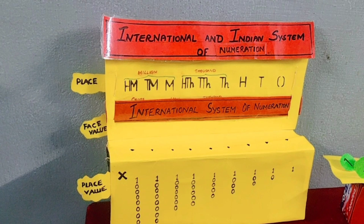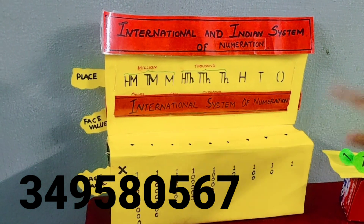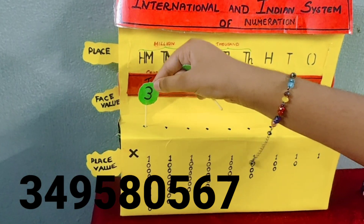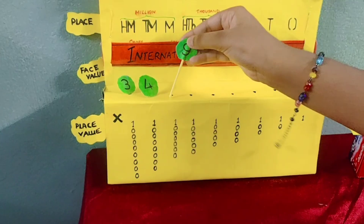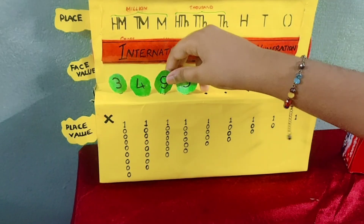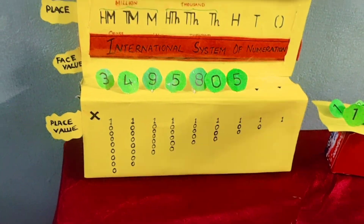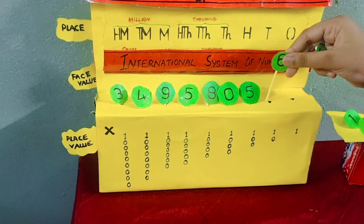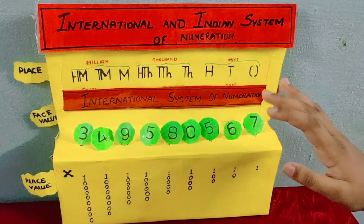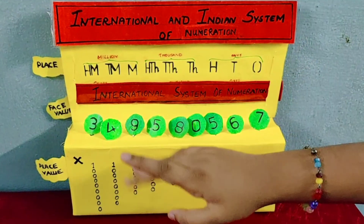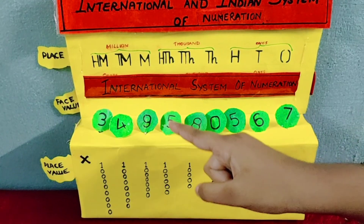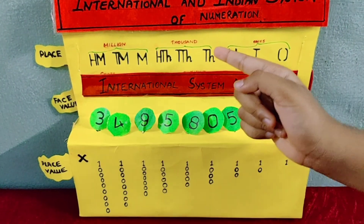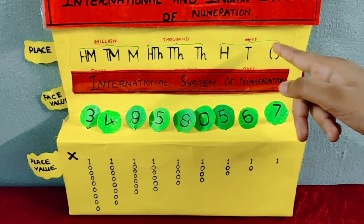Now let's see the international system of numeration. First, you have to arrange the number. Now I have arranged the numbers. 3, 4, 9 forms the millions period; 5, 8, 0 forms the thousands period; 5, 6, 7 forms the ones period.